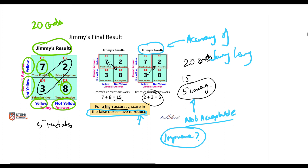I hope this lecture was clear. We understood how to fill Jimmy's result table with the true cells and the false cells. I would like you to go through this lecture again and revise these concepts. In the next lecture we will look at how Jimmy tries to improve his score. I will see you guys in the next lecture. Thank you.